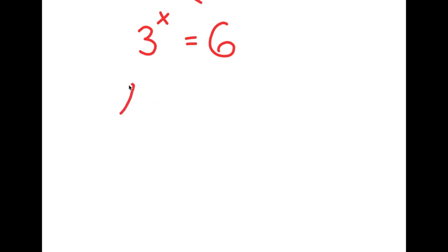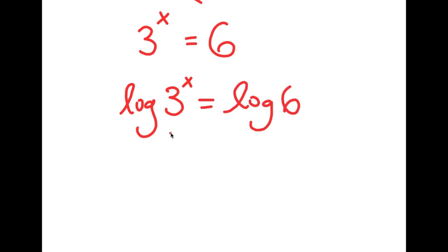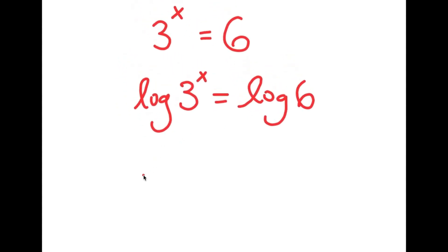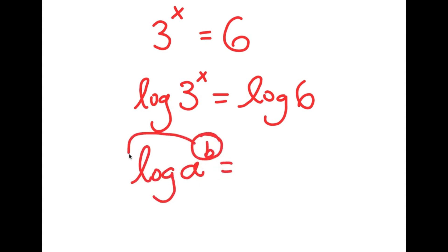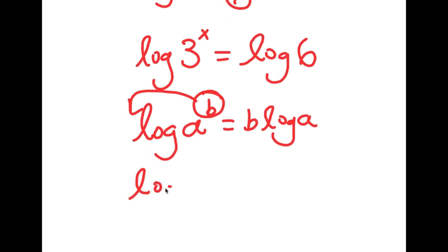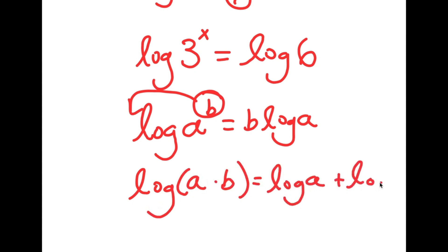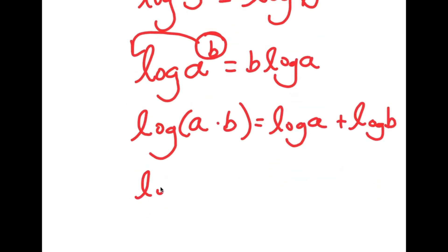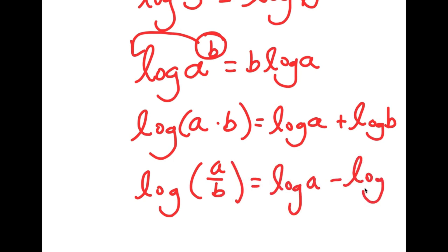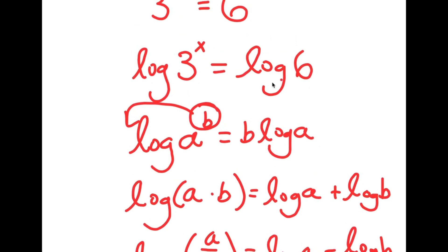To find the exact value of x, we're going to have to use logarithms. So if I take the log on both sides, I get log 3 to the power of x is equal to log 6. There are three important logarithmic properties you should know. First, log of a to the power of b equals b times log a. Second, log of a times b equals log a plus log b. And finally, log of a over b equals log a minus log b.